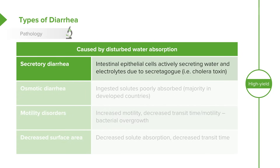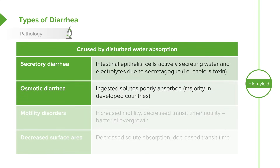The classic example of secretory diarrhea is cholera toxin. It is extremely rare to encounter secretory diarrhea in children in developing countries. Osmotic diarrhea is much more common. This is generally because of ingested solutes which are poorly absorbed, causing water to get extruded into the intestinal compartment and then stooled out. An example is a child who drinks too much juice.